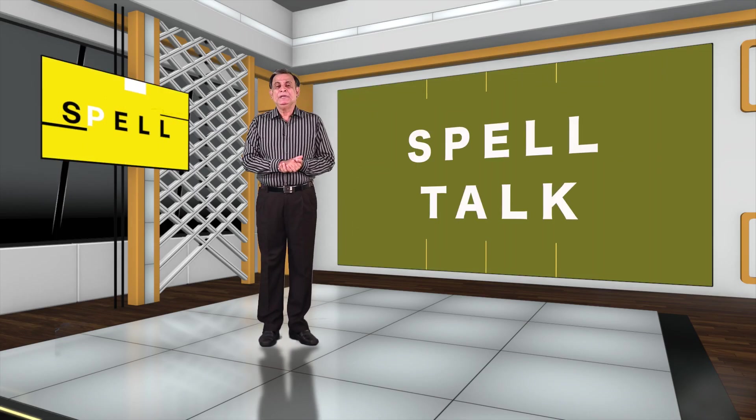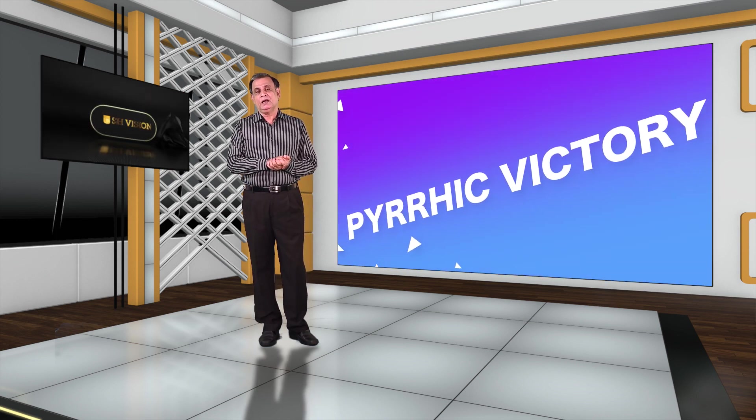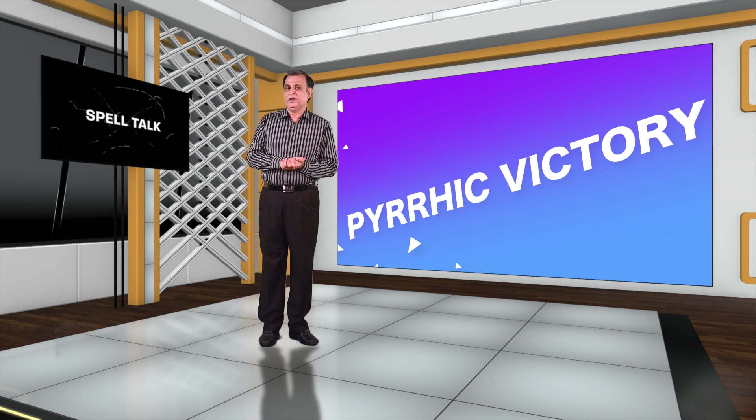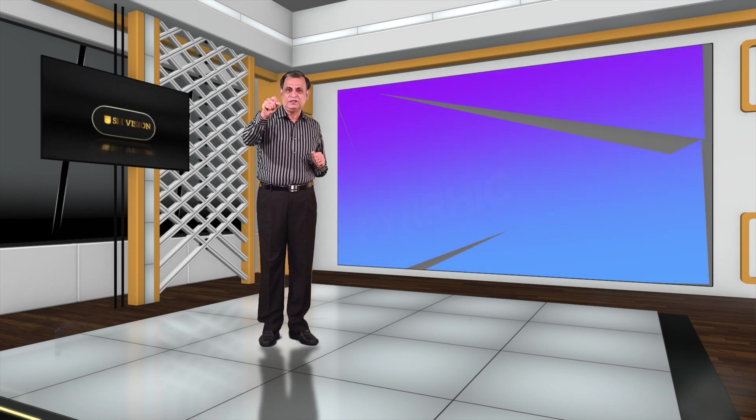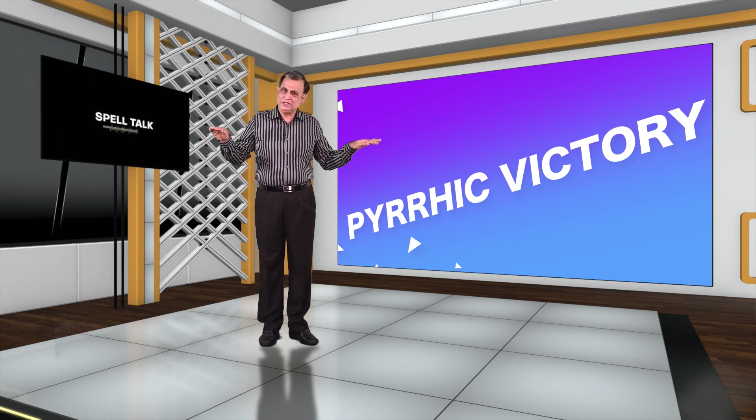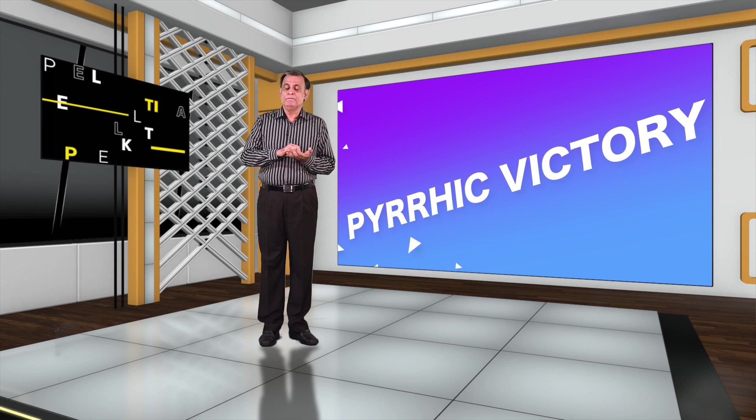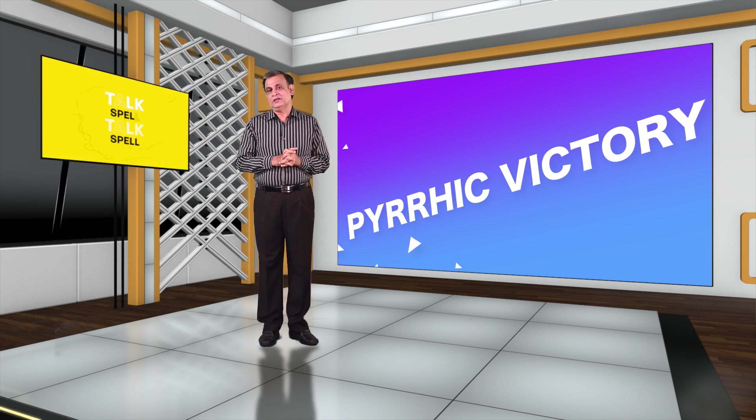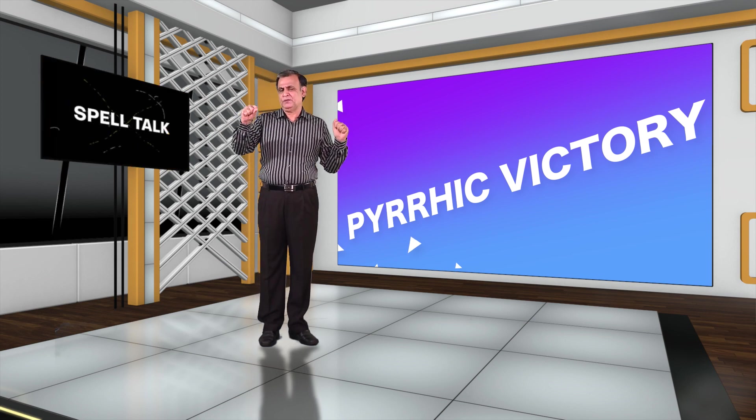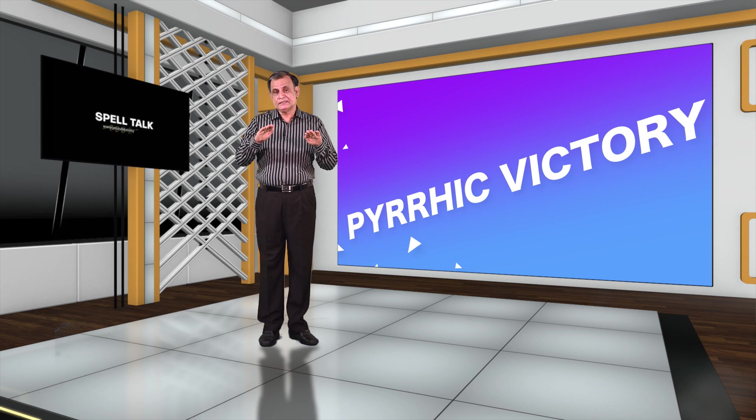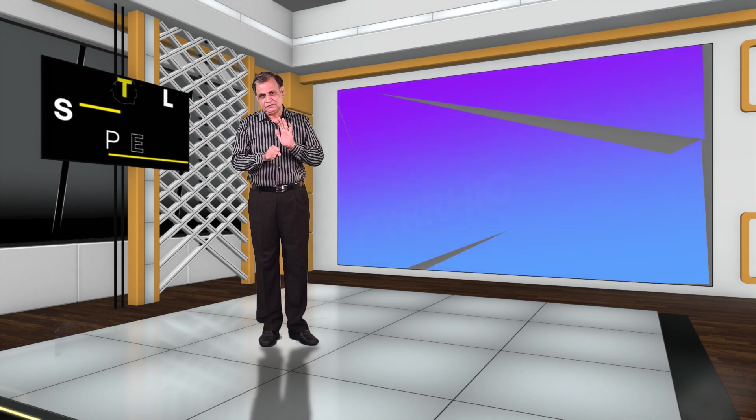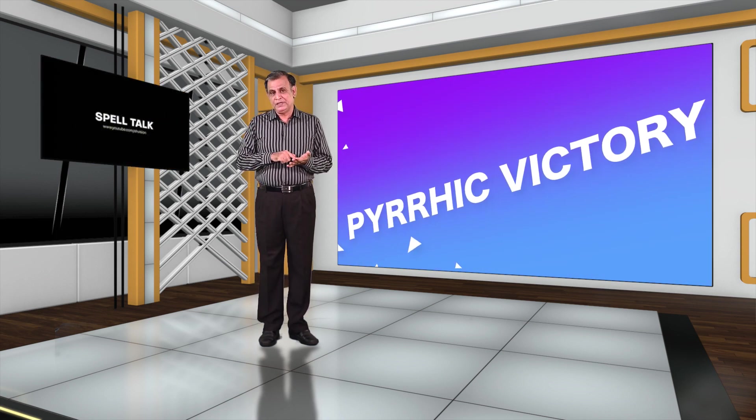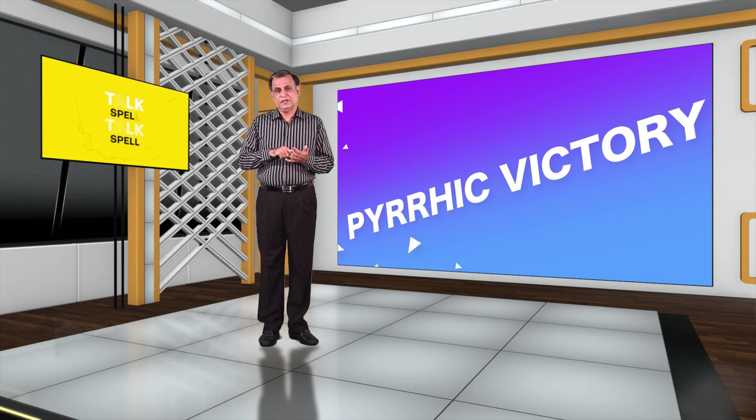Now we have Pyrrhic Victory: P-Y-R-R-H-I-C. Pyrrhic Victory means a victory obtained at such great cost that it ceases to be a victory. This word comes from Pyrrhus, the king of Epirus who defeated the Romans in 279 BC. The war was so troublesome that when the war was won, king Pyrrhus said, another such victory and we are lost. Pyrrhic Victory: P-Y-R-R-H-I-C, V-I-C-T-O-R-Y.